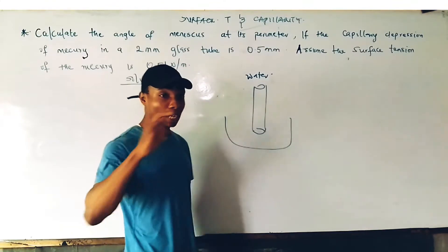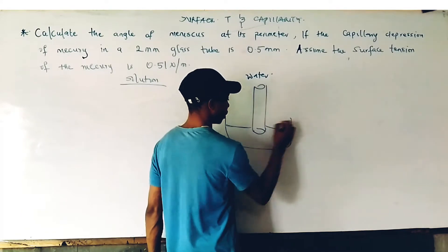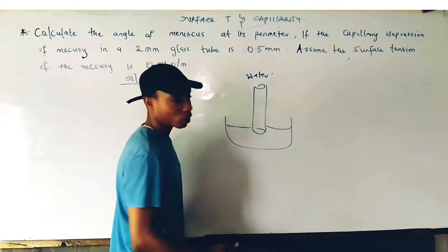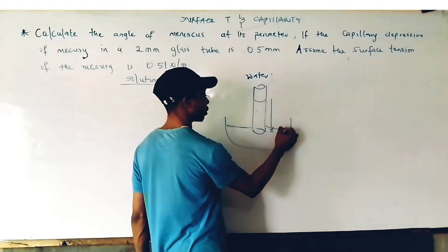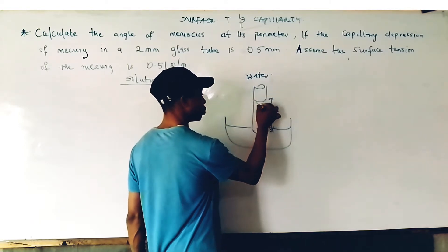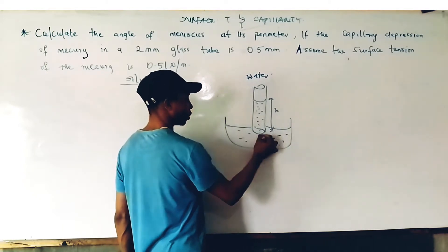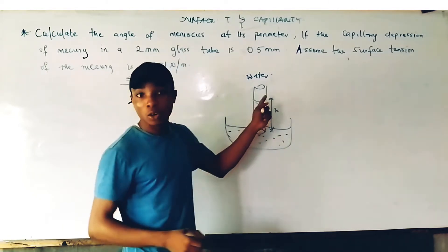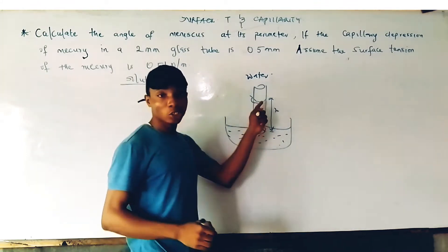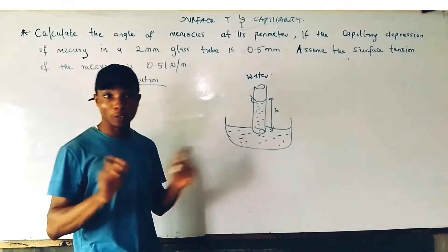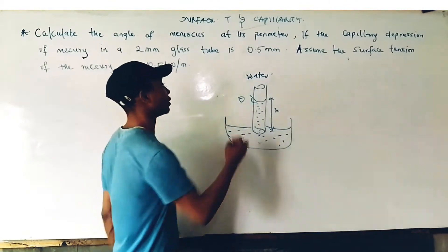In the case of water, the water will rise to a certain height in the tube, forming an angle of contact theta between the meniscus and the wall of the capillary tube. In the case of water, theta is regarded as zero.